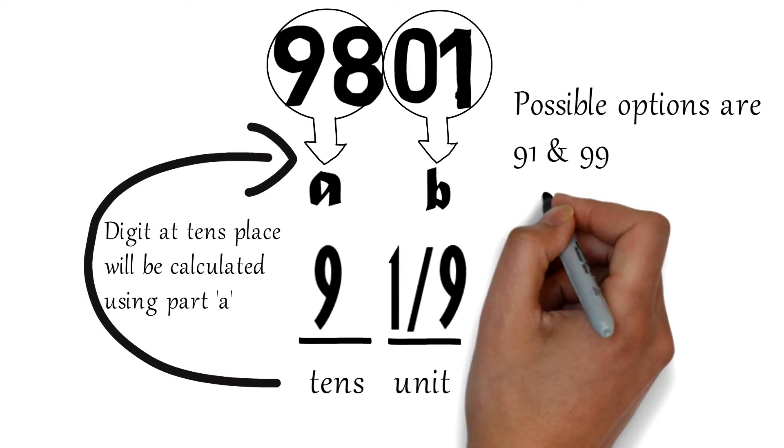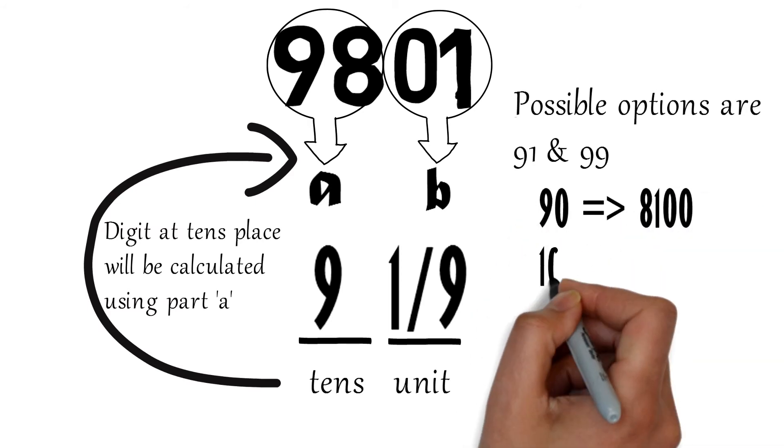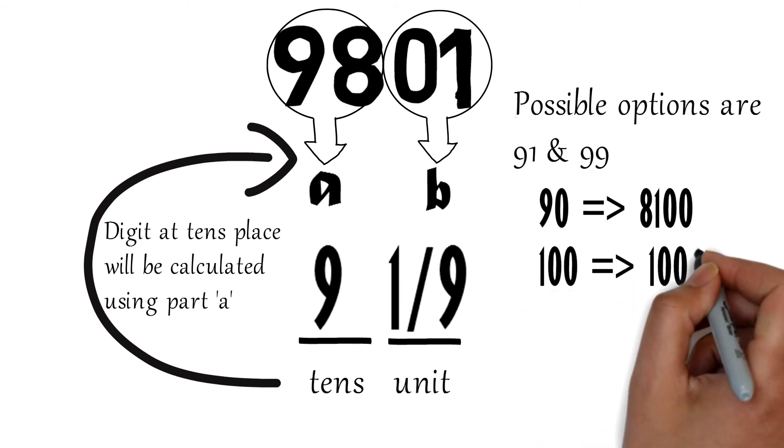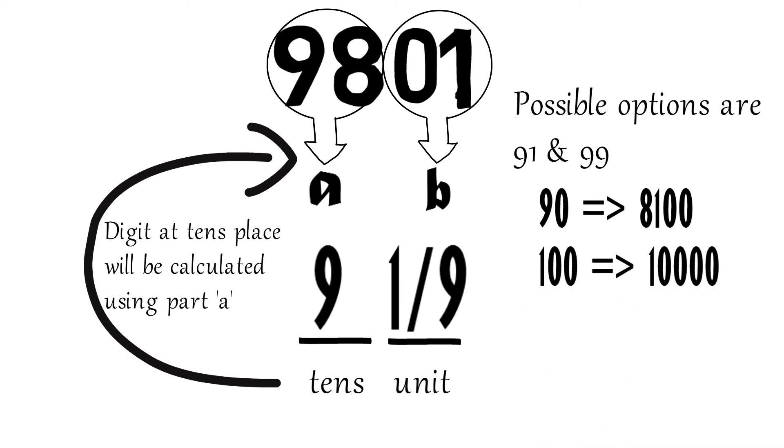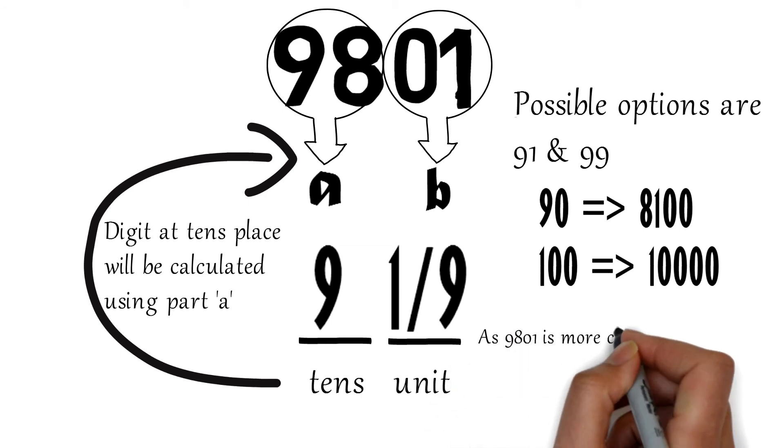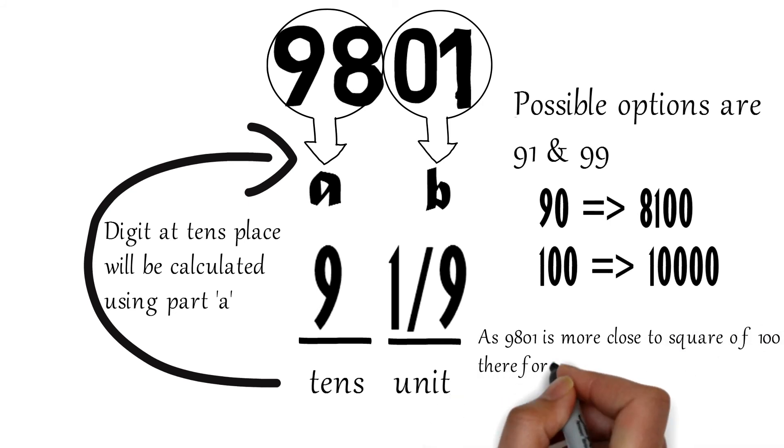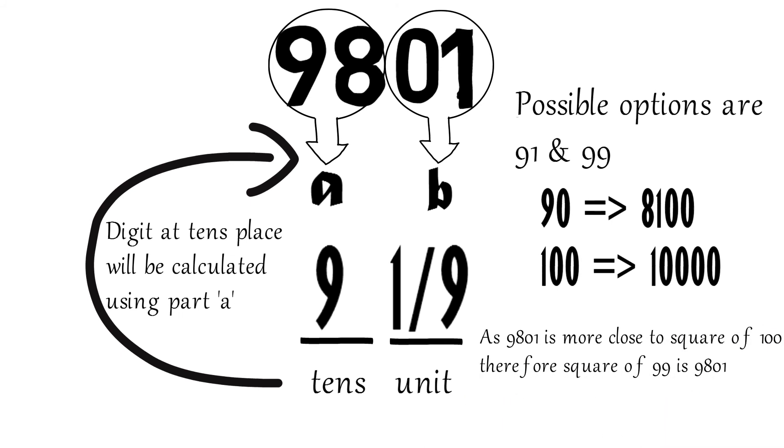The square of 90 is 8100, and the square of 100 is 10,000. Since 9801 is closer to 10,000, it means that 9801 is actually the square of 99.